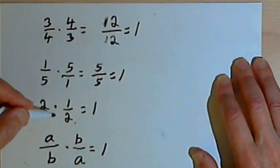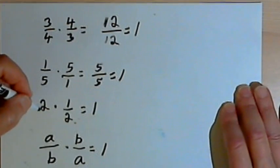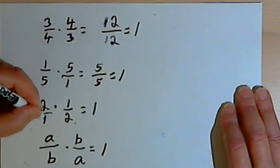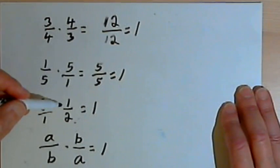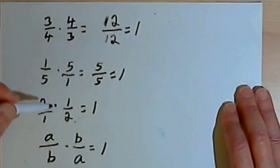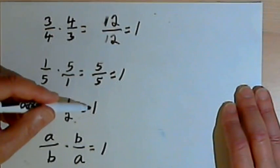When I have 2 times 1 half, I've got that whole number 2, so I'm going to think of that as 2 over 1, so I can flip it over to get its reciprocal or multiplicative inverse. That's going to be 1 half. When I multiply them, I'll get 1.